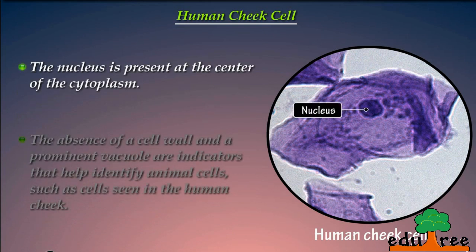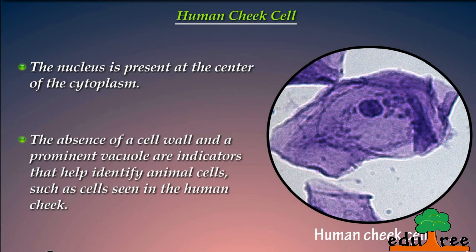The nucleus is present at the center of the cytoplasm. The absence of a cell wall and a prominent vacuole are indicators that help identify animal cells, such as cells seen in the human cheek.